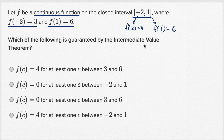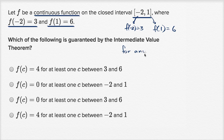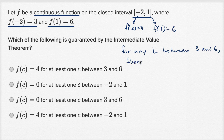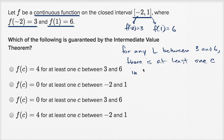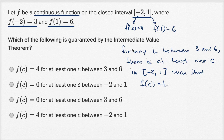All the intermediate value theorem tells us — and if this is completely unfamiliar to you, I encourage you to watch the video on the intermediate value theorem — is that if we have a continuous function on some closed interval, then the function must take on every value between the values at the endpoints. Or another way to say it: for any L between three and six, there is at least one C in the closed interval from negative two to one, such that f of C is equal to L. This comes straight out of the intermediate value theorem.